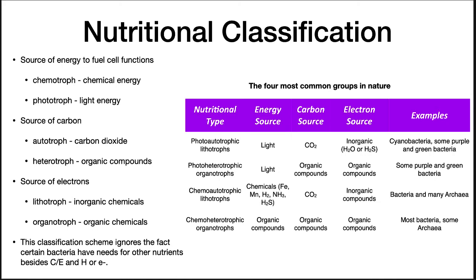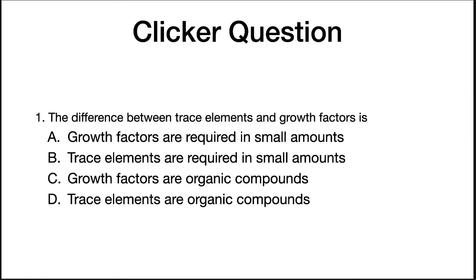One last thing to note: this classification scheme ignores the fact that certain bacteria have needs for other nutrients besides carbon, energy, hydrogen, or electrons. The difference between trace elements and growth factors — the correct answer is C: growth factors are organic compounds. It is important to know these classifications and classes of nutrients so that you understand what microbes need to grow.